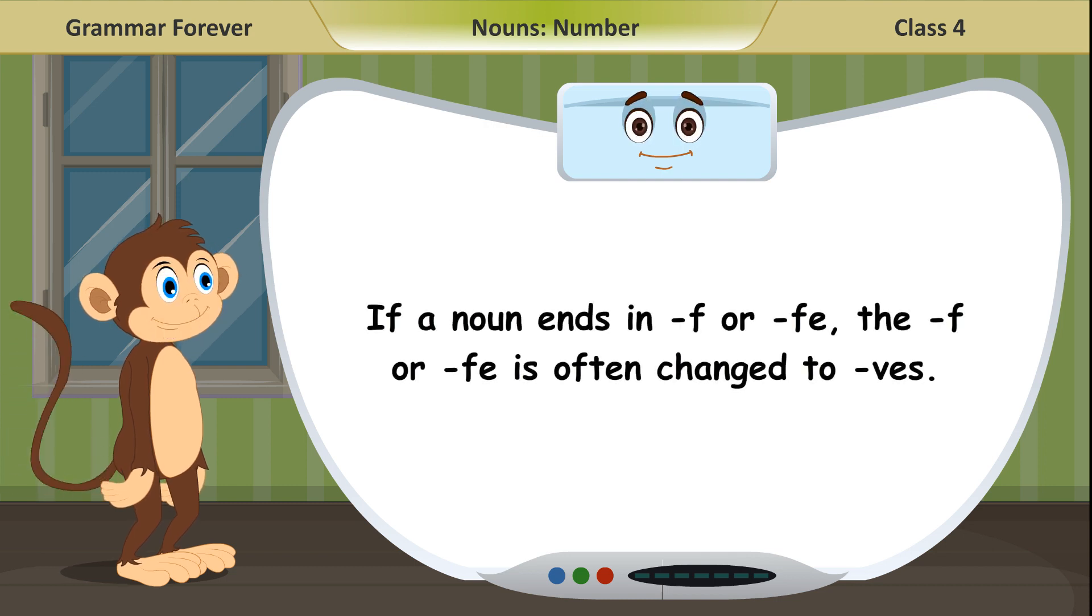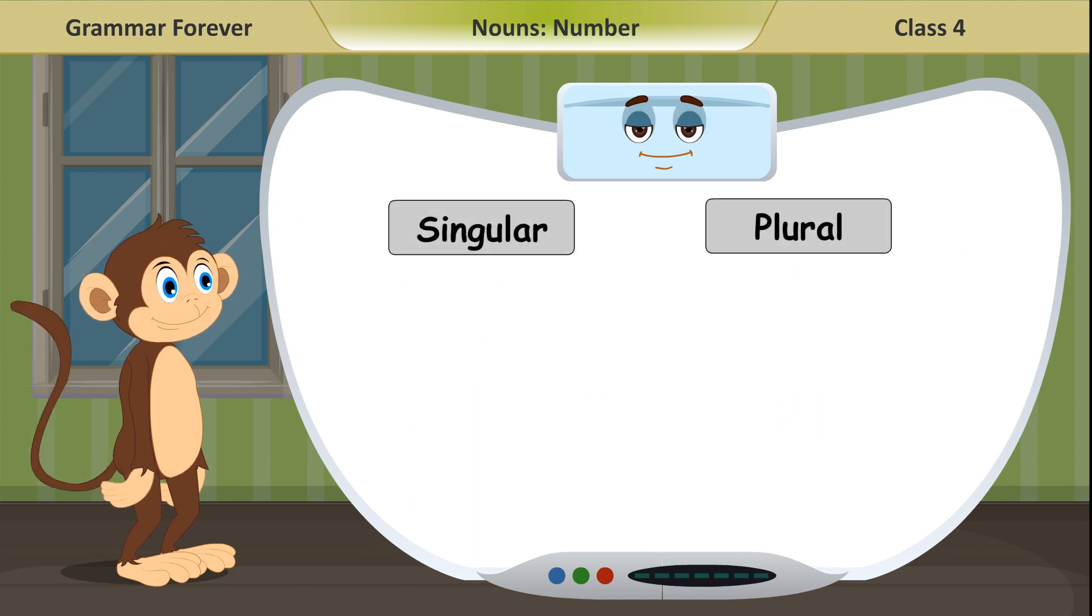If a noun ends in F or FE, the F or FE is often changed to VES. Singular, plural: Wife, wives. Knife, knives. Life, lives. Leaf, leaves.